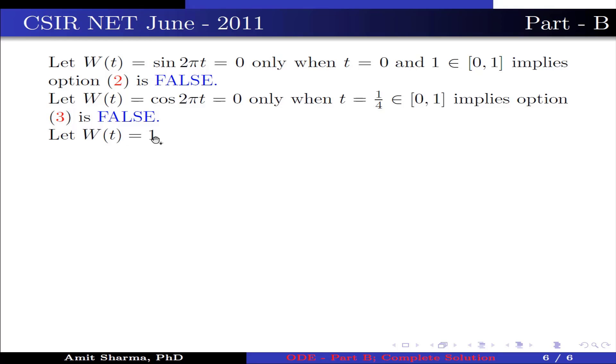Let W(t) is 1 which is never 0 for all t belongs to closed interval [0,1]. This implies option 4 is true. Hence option 4 is true.